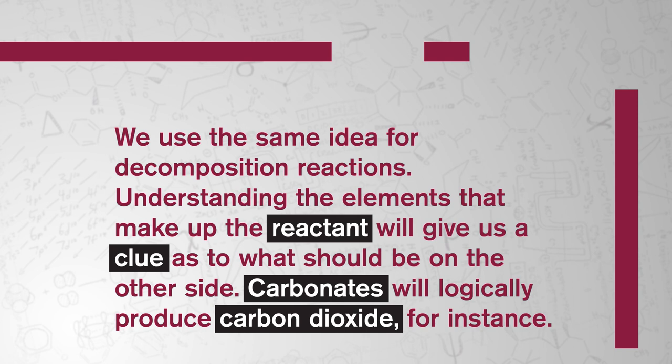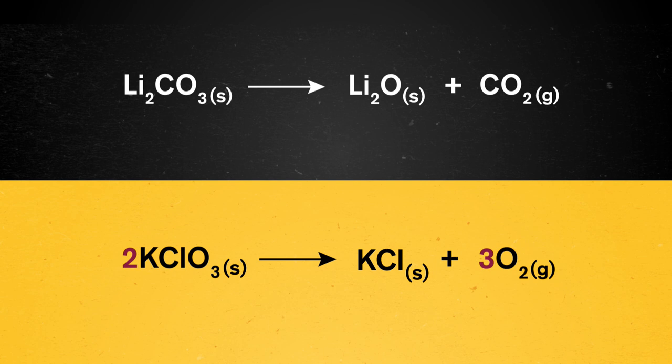Similarly, if we had a decomposition reaction of a substance with some sort of metal cation, like potassium or lithium, and an anion like chlorate or carbonate, we can expect that the products would be the metal cation bonded to one of the anion atoms since their charges attract. The other product would be whatever's left after that.